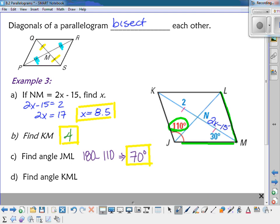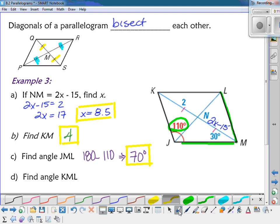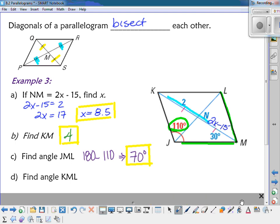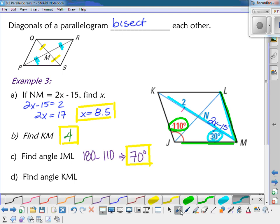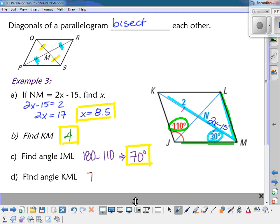Then to find angle KML, now we're talking about this angle here, KML. Part of it is 30, and the whole thing is 70. So we just have to do 70 minus 30. And we get that angle KML would be 40 degrees.